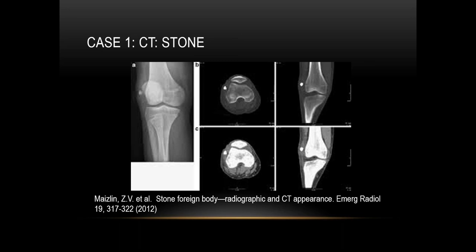Here is an example of CT: a patient had a stone foreign body. The x-ray shows a radiodense object in the subcutaneous tissues of the medial aspect of the knee, which can be readily seen on CT and localized in three dimensions.